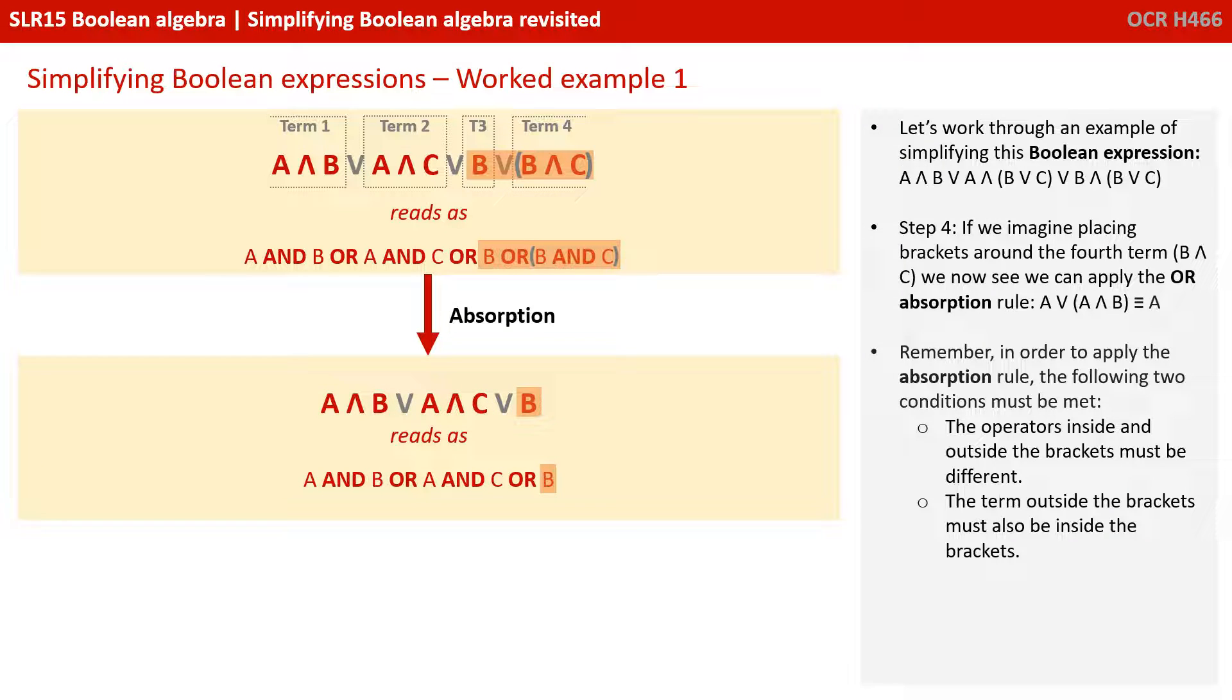Step four: If we imagine placing brackets around the fourth term B and C, we now see we can apply the OR absorption rule. A or A and B is the same as A. So we've got B or B and C is the same as B.